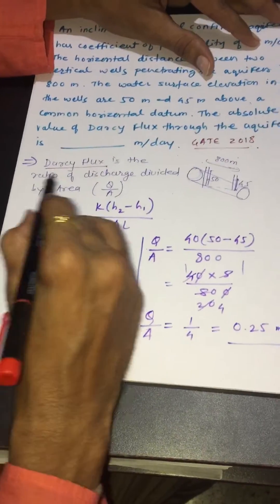Coefficient of permeability K is given 40 meter per day, delta L equals 800 meter, H2 equals 50 meter and H1 equals 45 meter.